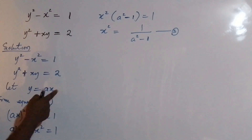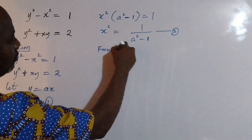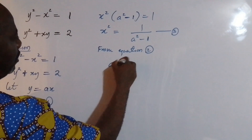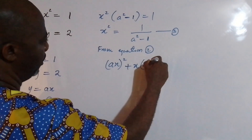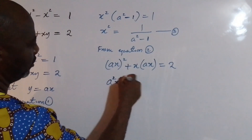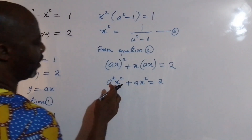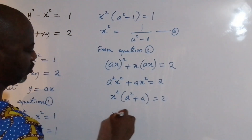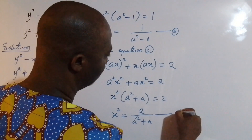Also, if I take this and substitute into equation 2, I get a squared x squared plus x times ax equal to 2, which gives a squared x squared plus ax squared equal to 2. Factoring out x squared, I get x squared times (a squared plus a) equal to 2. Therefore x squared equals 2 over (a squared plus a). I'm going to call this equation 4.